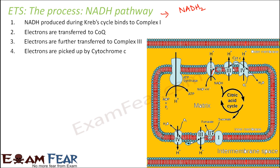From Complex 3, the electrons will be picked up by cytochrome C, which is present on the outer side of the membrane. Cytochrome C is again a mobile carrier and it will transfer the electrons to Complex 4. So now the electrons have reached Complex 4.